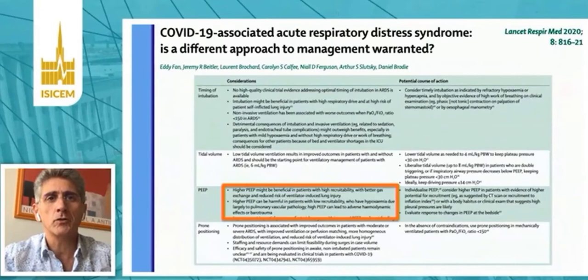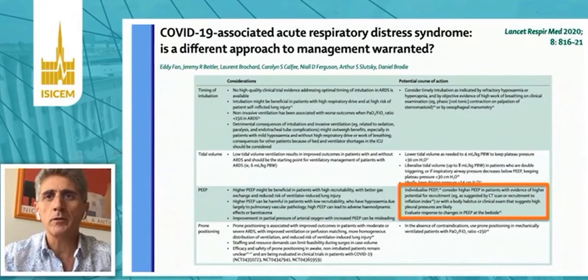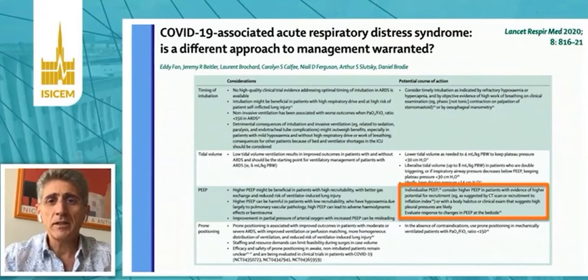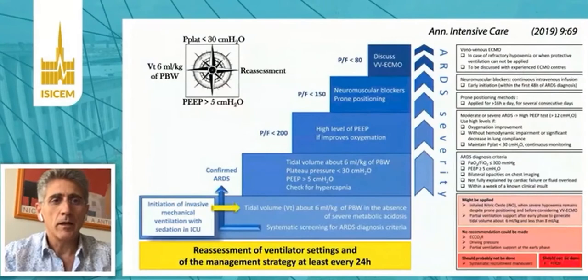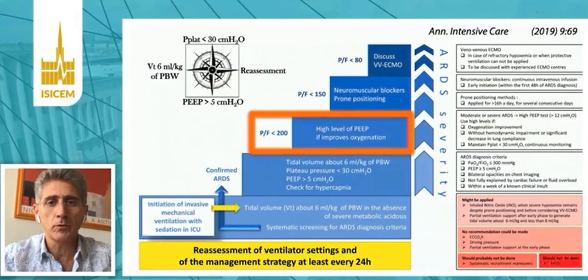In this very nice review article, Edifan and collaborators have proposed to individualize PEEP and consider higher PEEP in patients that have a higher potential for lung recruitment. This is very much in line with the recommendation proposed by the expert consensus conference from the SALF, where indeed in patients with the most severe hypoxemia and P/F ratio lower than 200, they propose to use higher PEEP level and titrate PEEP if it does actually improve oxygenation.